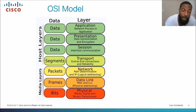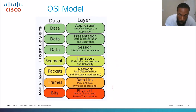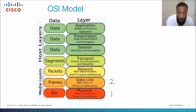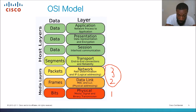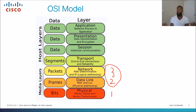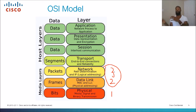Looking at the OSI model: at the bottom is Layer 1 — Physical — the actual cables and connectors. Then we have Layer 2 — the Data Link layer — which deals with MAC addresses, VLANs, frames, and so on. Layer 3 is the Network layer, which handles routing. Layer 2 switches handle Layer 2 functions and Layer 3 switches handle Layer 3 functions — that's why they're named accordingly.